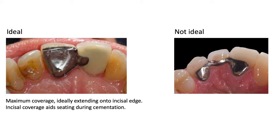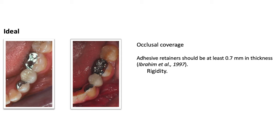One ideal feature to incorporate into your bridge design is maximum coverage for better bond strength. You can achieve this by extending your retainer just short of the incisal edges, mesially and distally, and just supragingivally to allow cleansability. Posteriorly, we should be doing a fixed-fixed design aiming for full occlusal coverage, because partial occlusal coverage means occlusal forces in lateral excursion can cause the retainer to shear off.